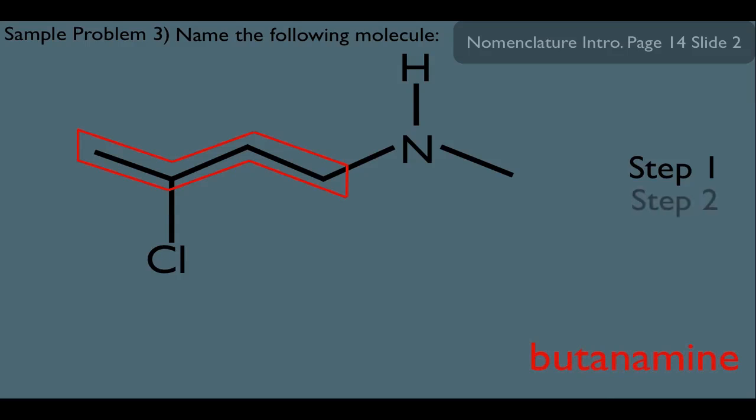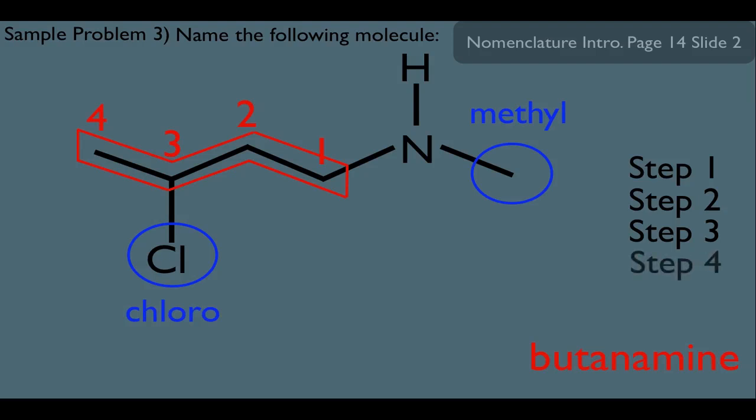Now for step two, the way we want to number the carbons here, of course, is from right to left. So we can get the amine on carbon one and the chlorine on carbon three and have nice low substituent numbers. Which brings us to step three, circling and labeling our substituents. Notice we have the chlorine right here, but we also have this methyl right here. So that makes us ready for step four now.